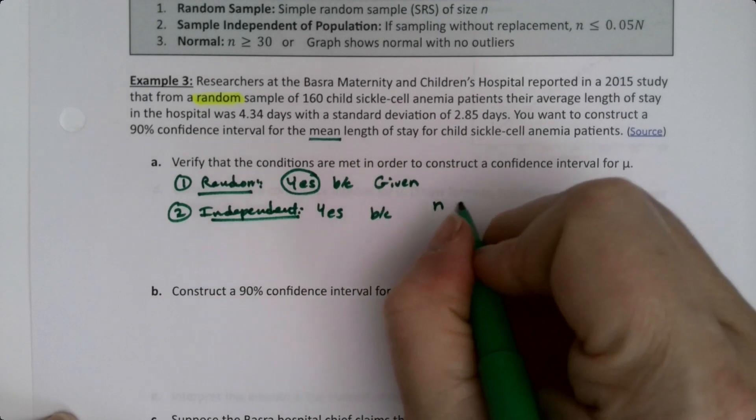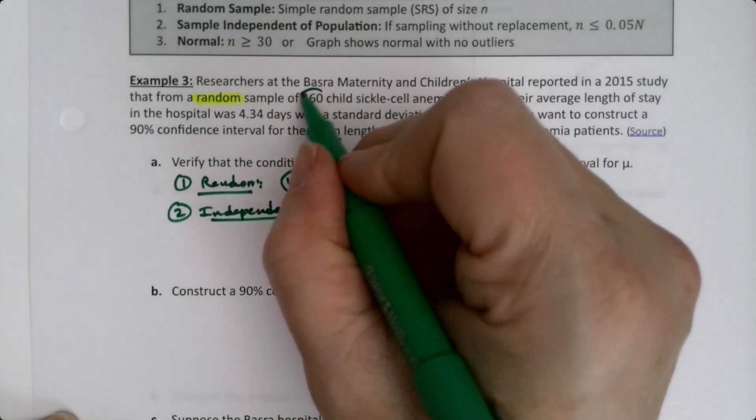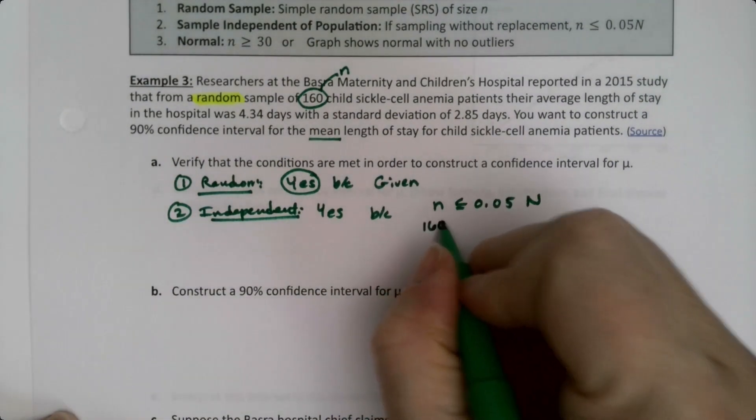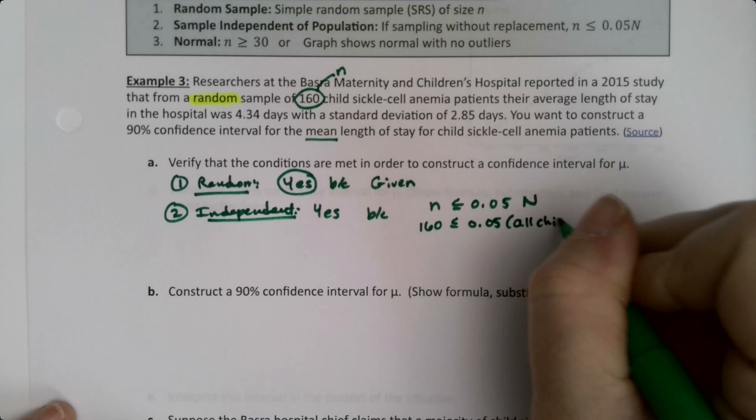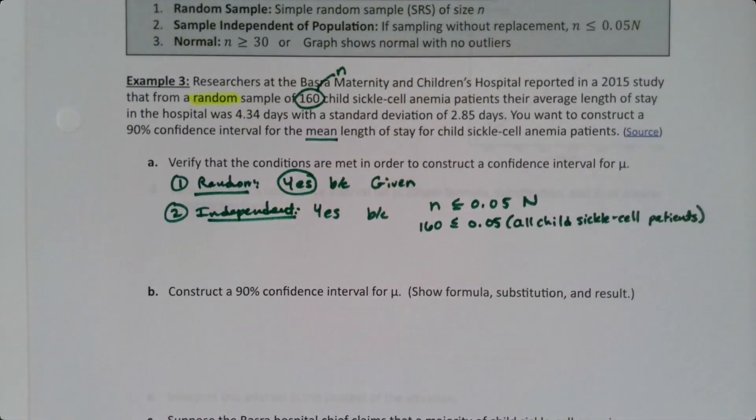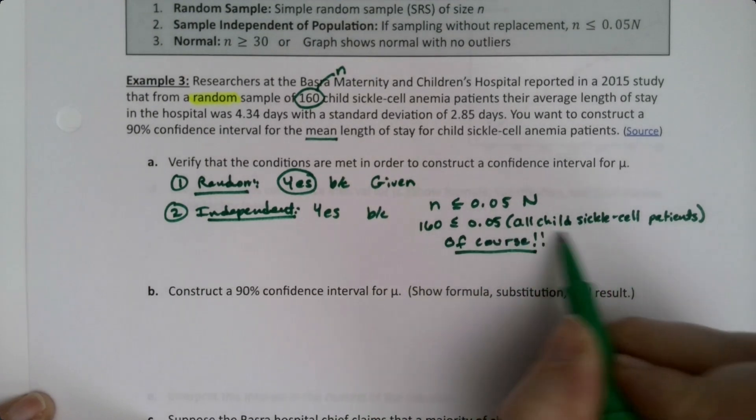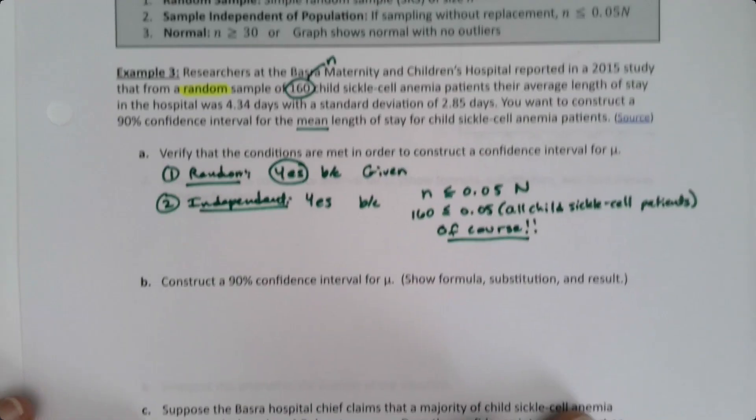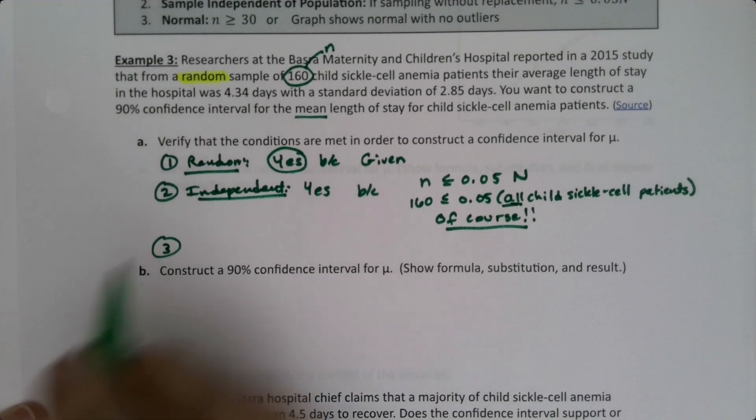So we need little n to be less than .05 capital N. So little n is 160, it's right here. That's little n. So 160, .05. Now we were not given a capital N on this one, so we'll just have to write what it would be, which would be all child sickle cell patients. Well, there's a lot of them, right? Unfortunately, sickle cell anemia is an extensive disease and has a lot of people that have it, especially children. So this is going to be, of course it is, right? Of course, this is so large, this number, whatever this is, that 160 will be less than .05 of all of the patients of that, right? The all is key there. So we're just going to have to make that argument and leave it. We don't know the full number.